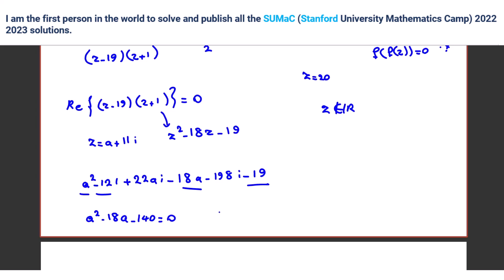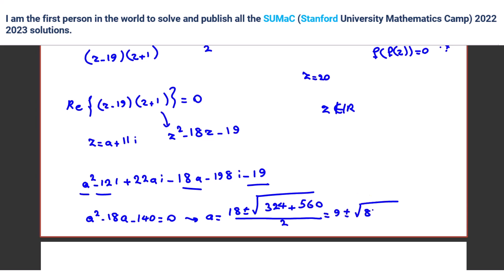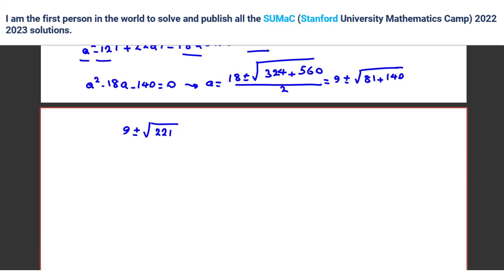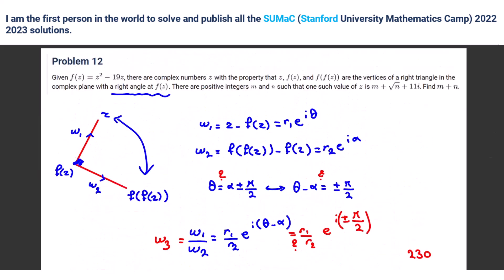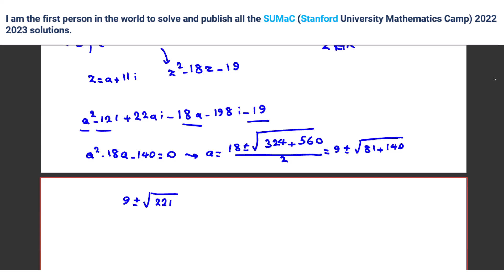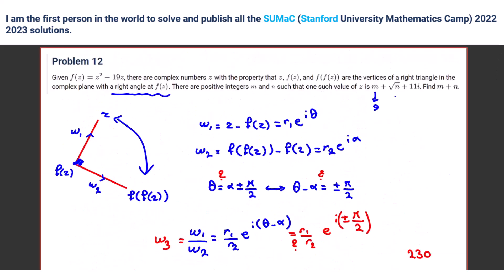Solving the quadratic: A = (18 ± √(324 + 560)) / 2 = 9 ± √221. Since the answer is in the form 9 plus root(221), B = 221. So the final answer is 9 + 221 = 230.